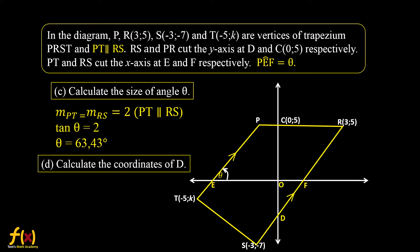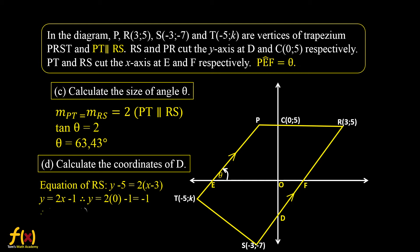Question D: calculate the coordinates of D. D is on the y-axis as well as on the line RS. The x-coordinate of D is clearly 0. For the y-coordinate, we calculate the equation of RS. The gradient is 2, and using one point on RS, we get the equation y = 2x − 1. Substituting x = 0, we get y = −1. Therefore, the coordinates of D are (0, −1).